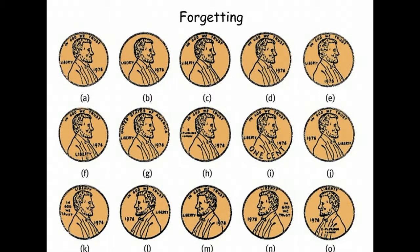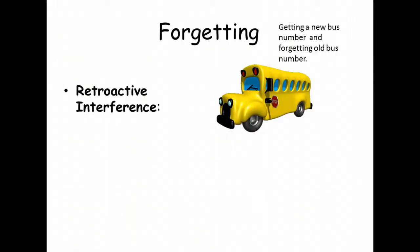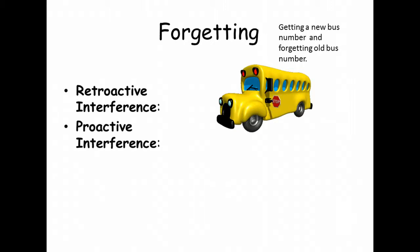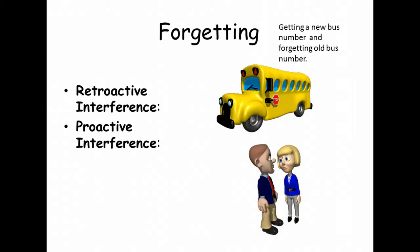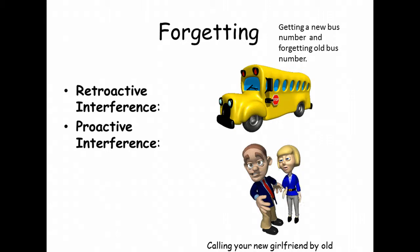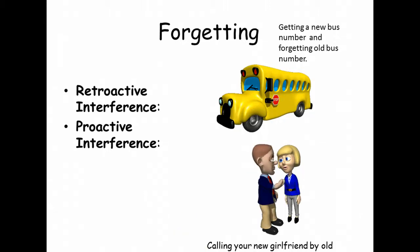Retroactive interference means new information blocks out old information — like getting a new bus number and forgetting the old one. Proactive interference is basically the opposite: old information blocks out new information — which is kind of like calling your new girlfriend by your old girlfriend's name. Trust me on that last one — that doesn't end well, even after ten years.